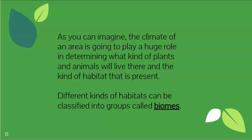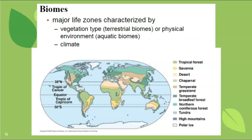As you can imagine, climate plays a major role in what organisms and plants live in an area and what habitats are present. A key vocabulary word you should know is biome — basically a type of habitat, also called a major life zone. Terrestrial biomes are characterized by vegetation type, while aquatic biomes are characterized more by their physical environment. Here is a map of some of the terrestrial biomes on earth — we'll learn a lot more about them in a separate lecture.